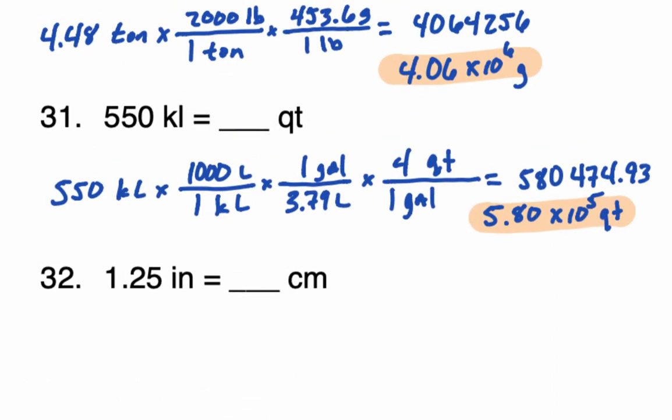So keep in mind as you go through and solve problems for the rest of the year: make sure your calculator is in scientific notation mode, and make sure you are using the correct number of significant digits. If it is a conversion, you are going to use the initial value you are converting to determine the final number of significant digits in your answer.